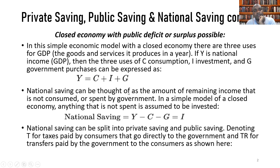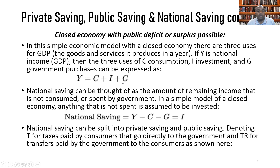National saving can then be thought of as the amount or residue of national income that is not consumed or spent by government. In a simple model of a closed economy, anything that is not spent is assumed to be invested. So if we make investment the subject of the formula, the resultant is Y minus C minus G being equal to investment.